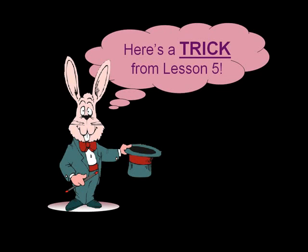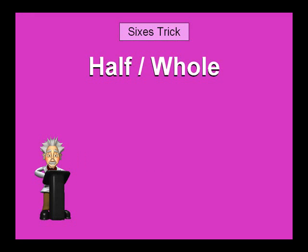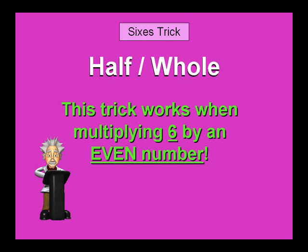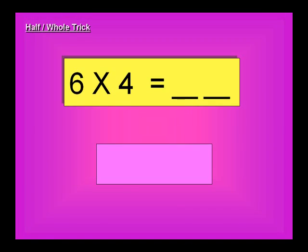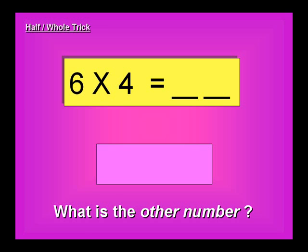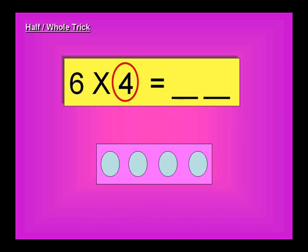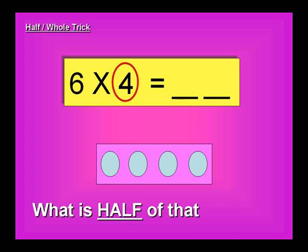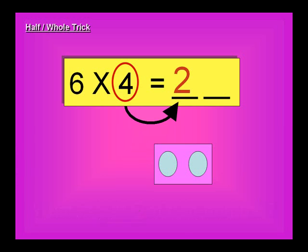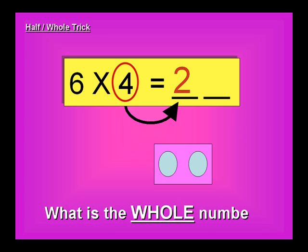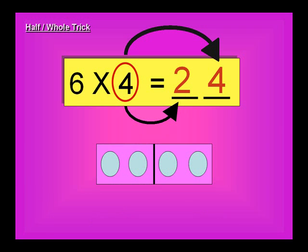Here's a trick from lesson five. The strategy is the half-whole trick. This trick works when multiplying six by an even number. What is the other number? What is half of that number? What is the whole number? Half-whole.